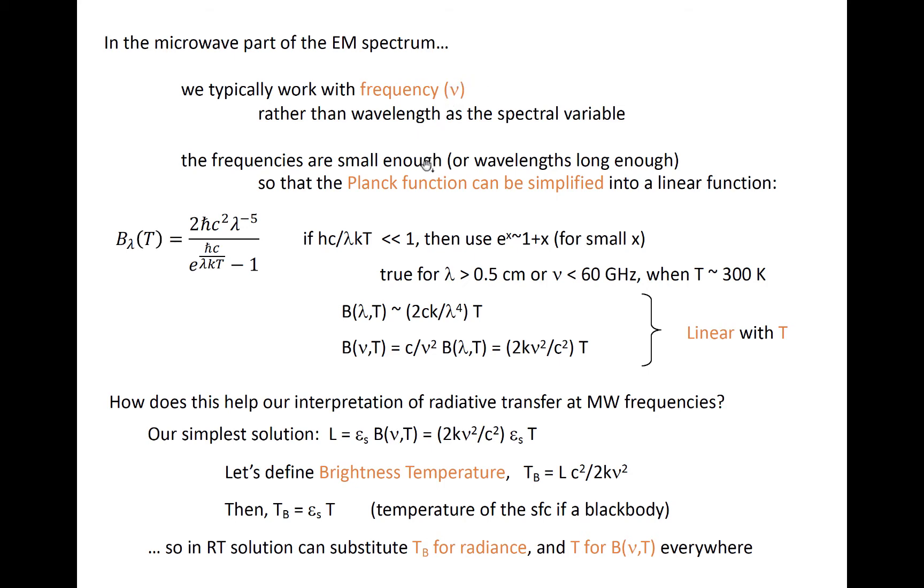The frequencies we're dealing with in the microwave are small enough so that we can re-express the Planck blackbody equation as a linear function of temperature. For microwaves at long wavelength, the ratio in the exponent in the denominator becomes very small. We can use the fact that the natural exponential function for a small exponent simplifies to 1 plus the exponent to remove the exponent from the denominator and simplify this equation.